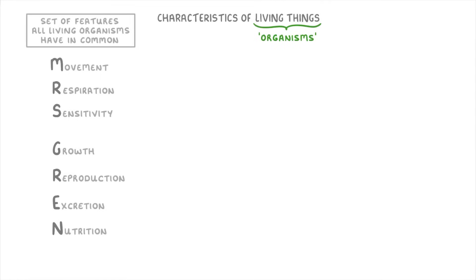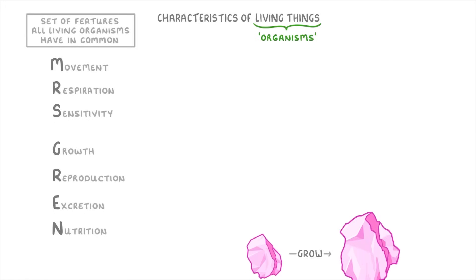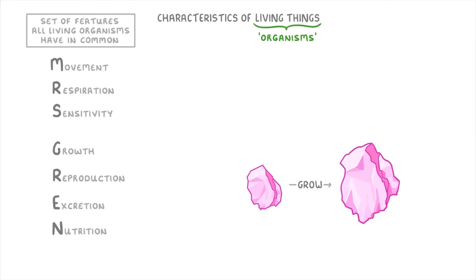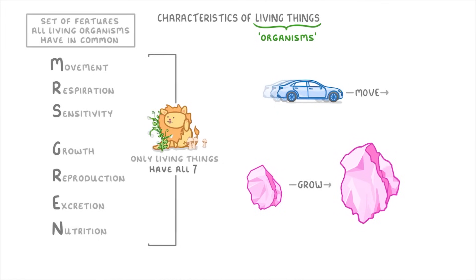One thing to say before we start is that non-living things may also have some of these features — for example, a crystal can grow and a car can move — but the important point to remember is that only living things have all seven features.